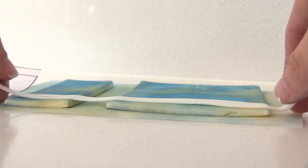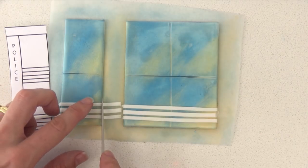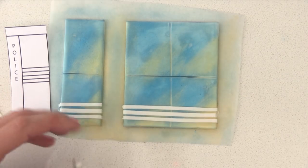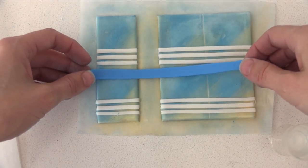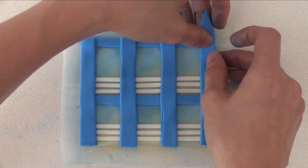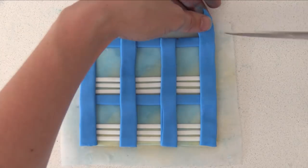You will need to dampen the back of this fondant to make it stick, and then trim it to size. Cut a strip of blue and place it across the top of each window. Then place a strip of blue up between each window and along the edges.